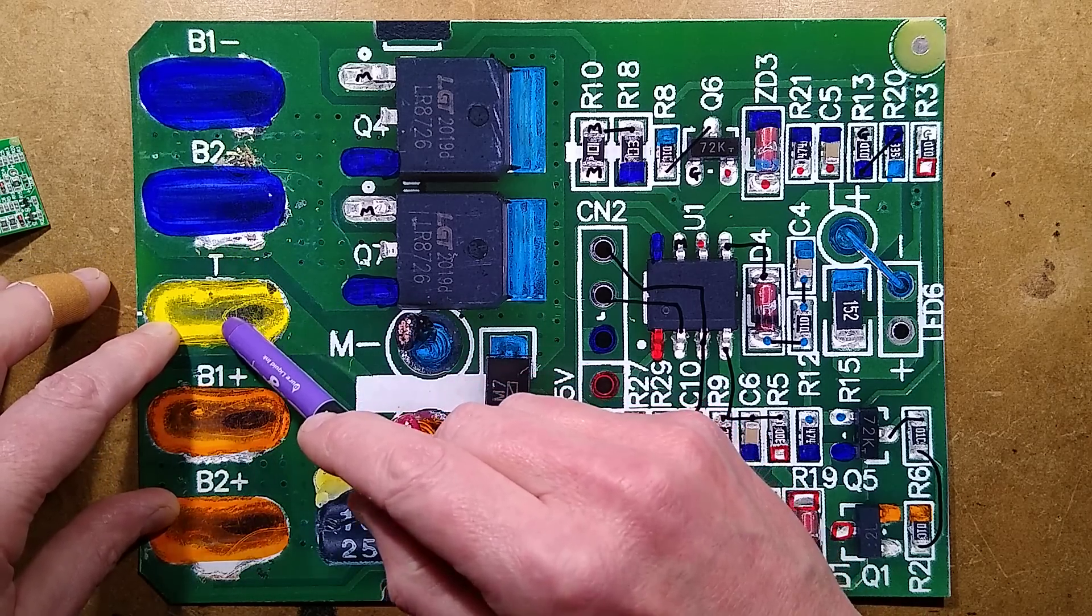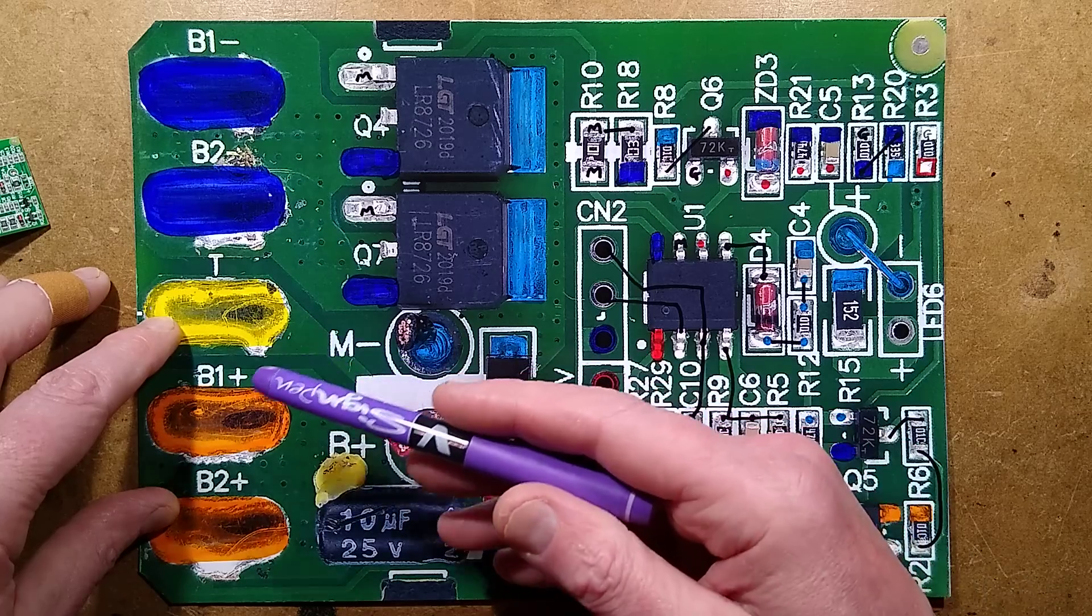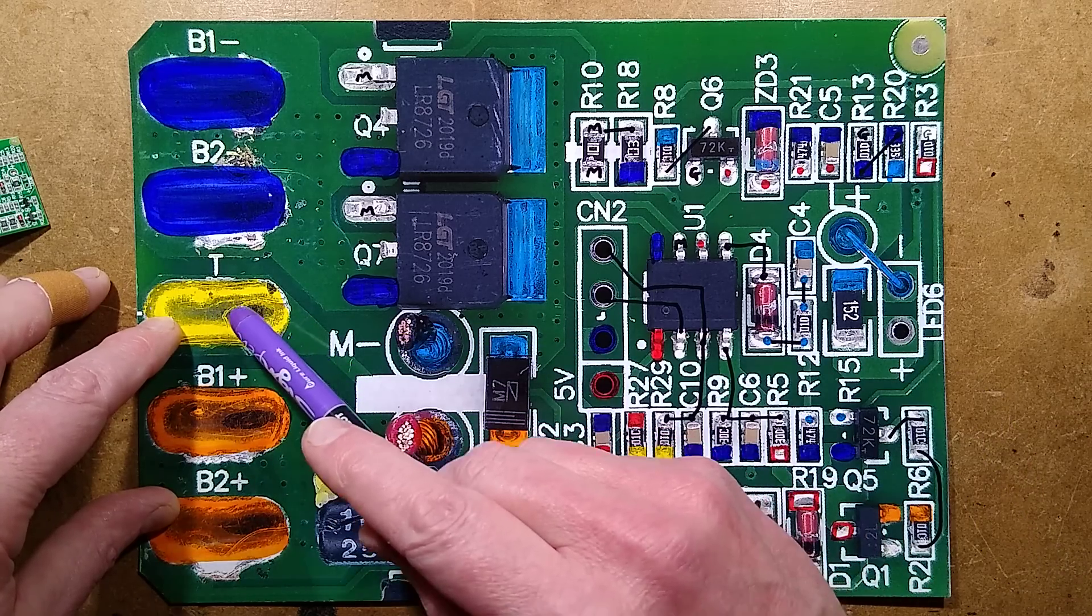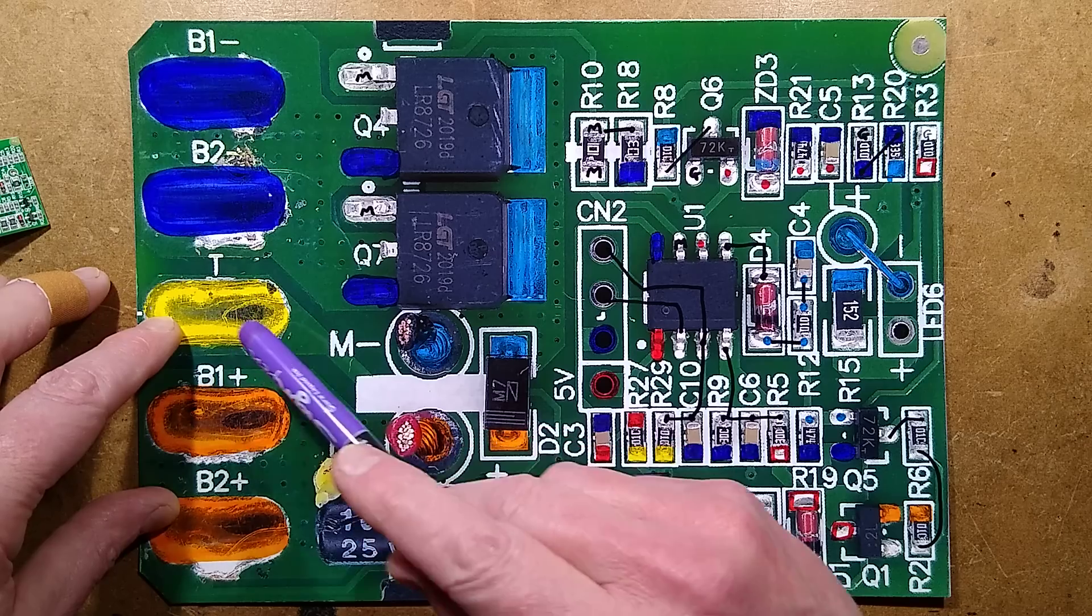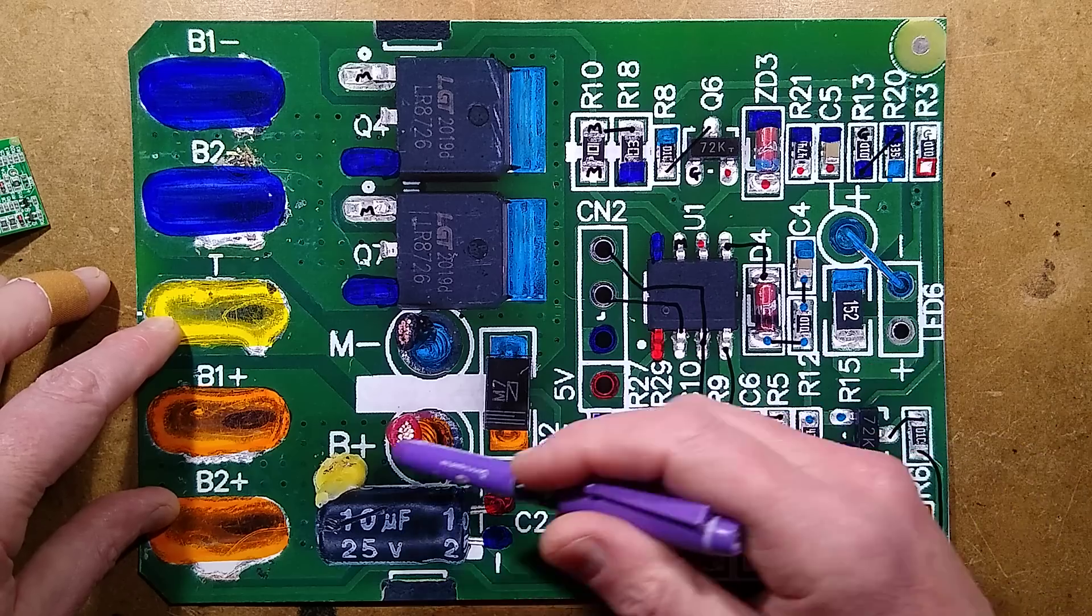One is the temperature sensor connection that goes to the NTC thermistor in the battery to tell this circuitry the temperature. Also, the battery itself, if it detects that it's got a low charge, it can cut off the supply to the NTC thermistor, and this will detect that as well. It basically stops this operating.